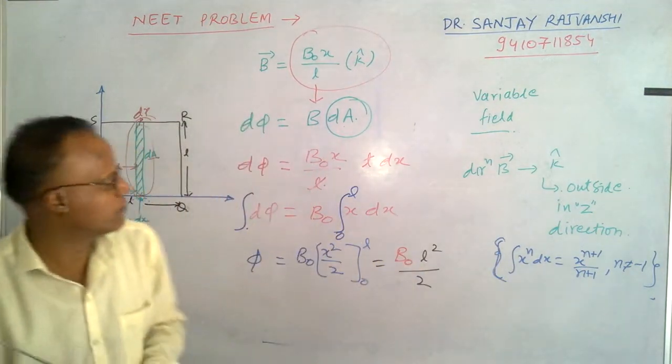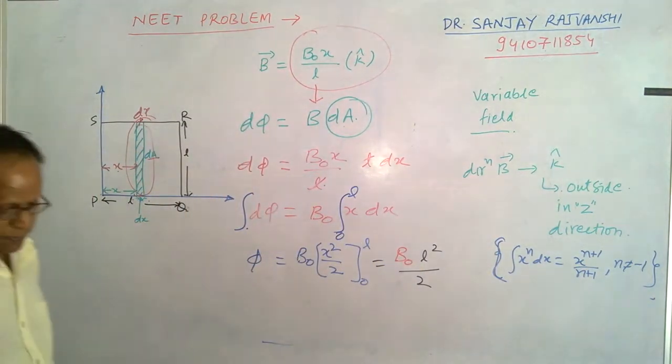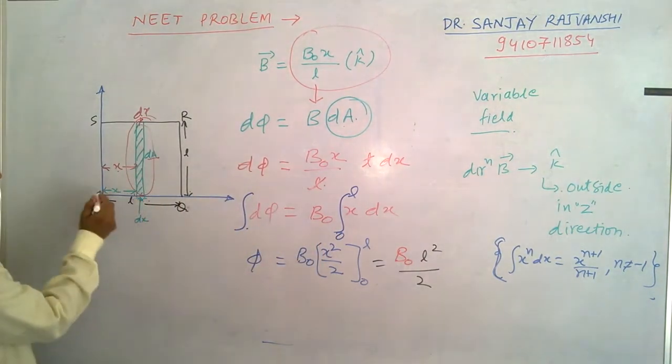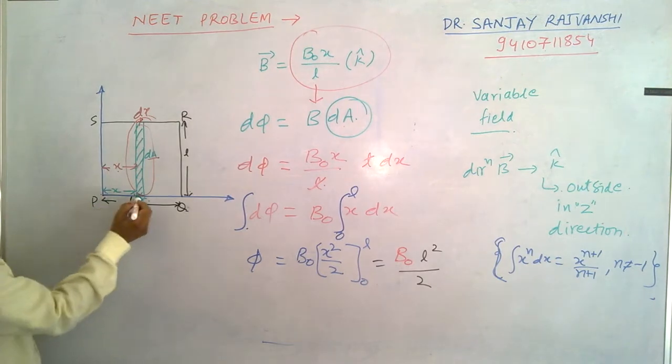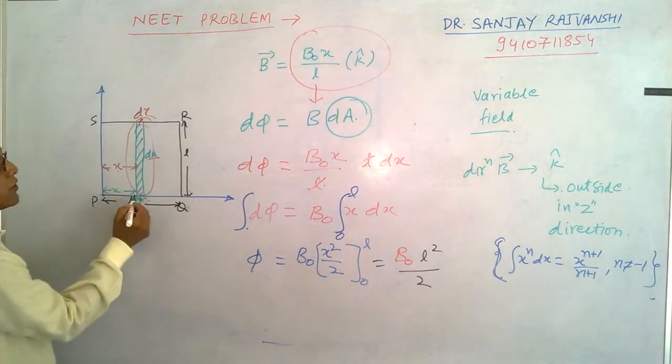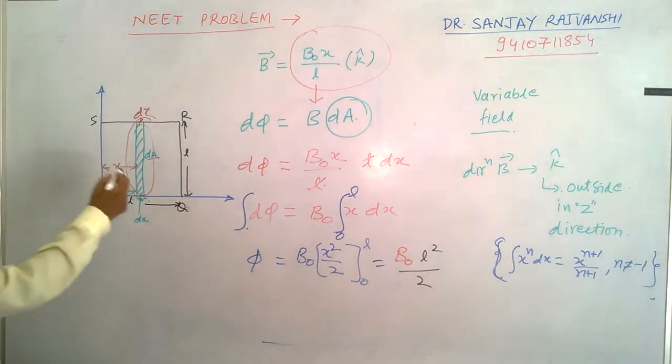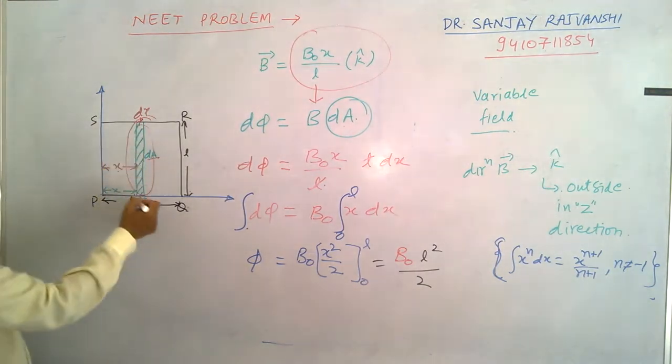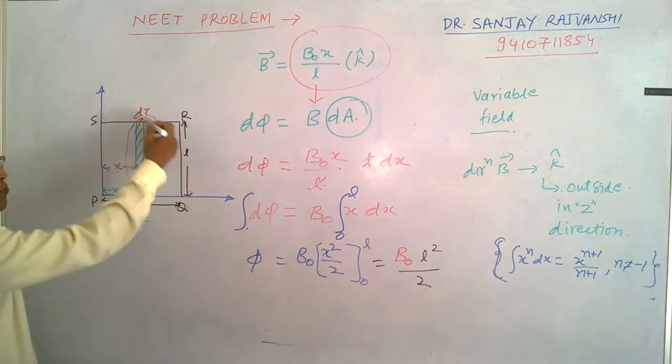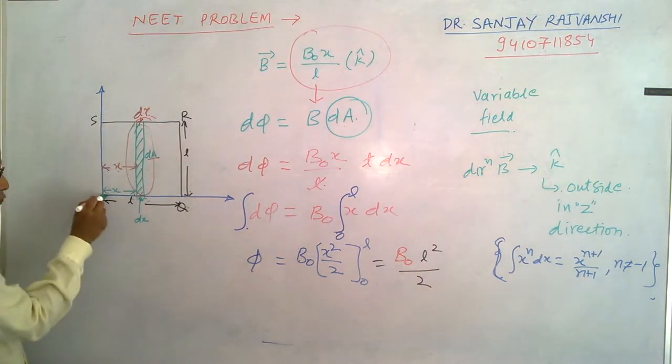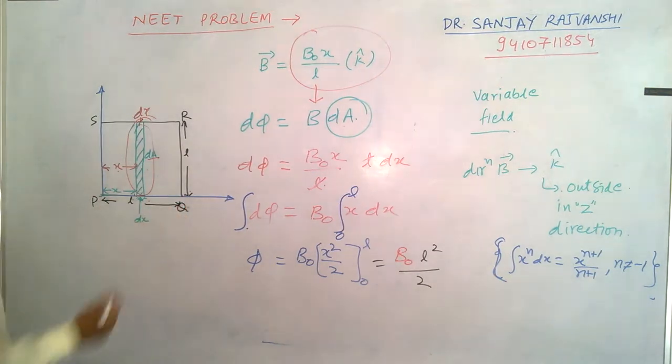Now I am taking a point x. At x, this space from this side P has a small element of thickness dx. So area of this element is say dA. So we have to calculate the flux due to this portion. Calculate the flux due to this portion, then integrate from P to Q. You get the net flux.